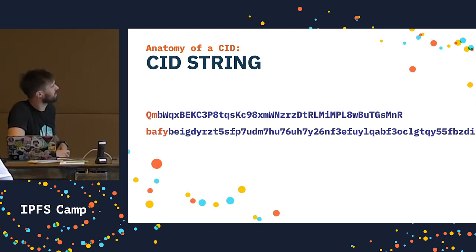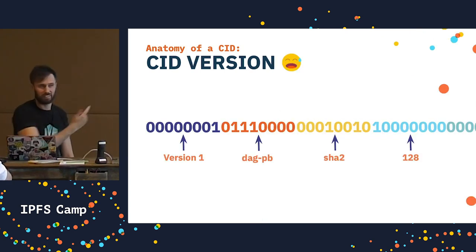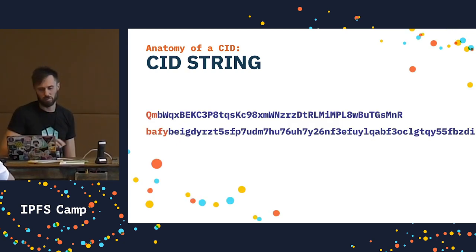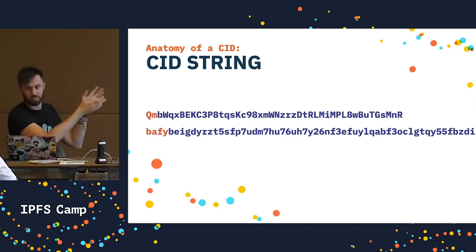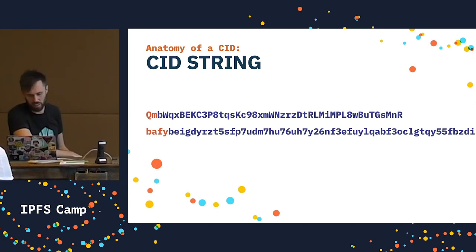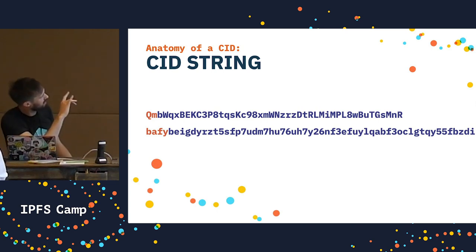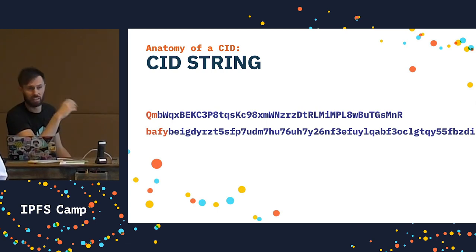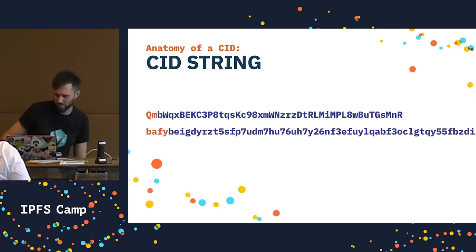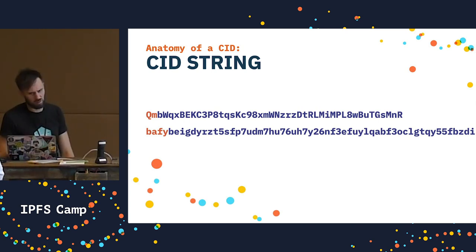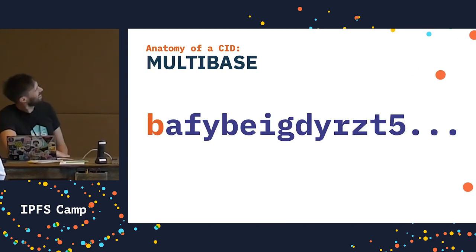CIDs are binary data. Zeros and ones make for really long strings when printed out. So we use a higher number-based encoding to make them shorter and easier to print out and recognize in string form. But how do we interpret the number-based encoding? Characters in one encoding are valid in another, so we can't just look at the string and say that's base 32 or base 16. The solution is multibase — a prefix that helps us know the number base used. The first symbol is the identifier: B is base 32, Z is base 58 BTC, and M is base 64.